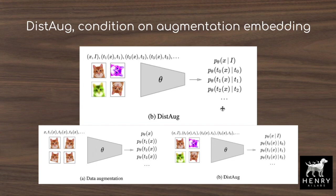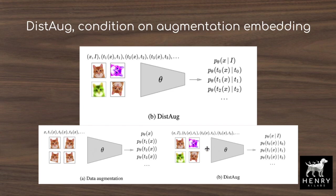The idea behind DistAug is that we're not just going to model the density of the transformed images and treat them as any other data point in the dataset. In an autoregressive conditional probability model — modeling the probability of each pixel given all previous pixels — DistAug conditions on the transformation of the data. We'll have embeddings that map different augmentations into a dense vector representation, injected into the start-of-sequence token, performing multitask learning where a rotated pink cat is conditioned on its transformation rather than treated as just any other image.